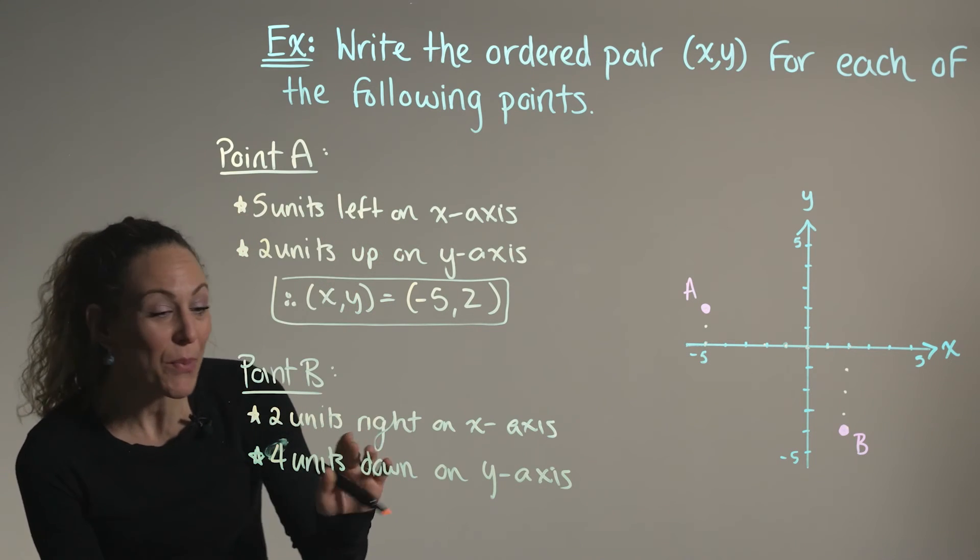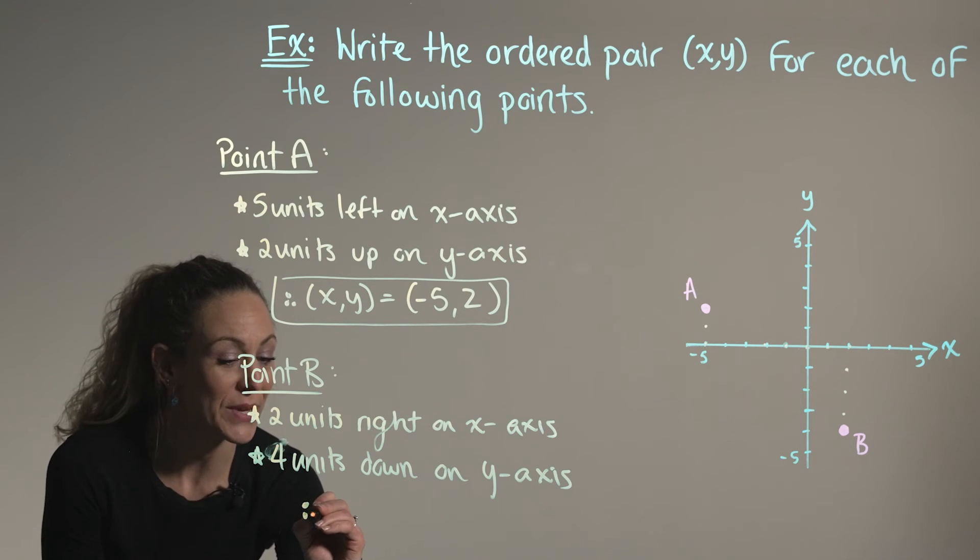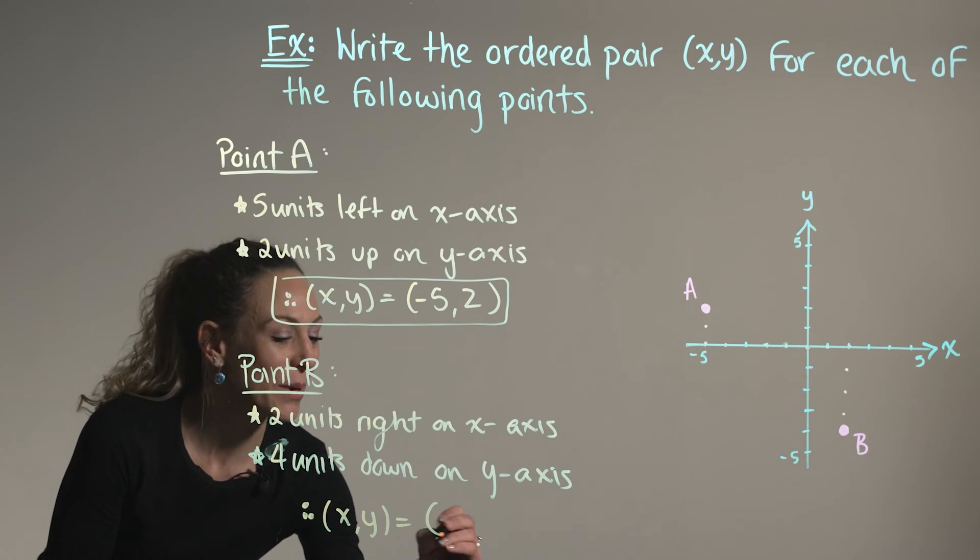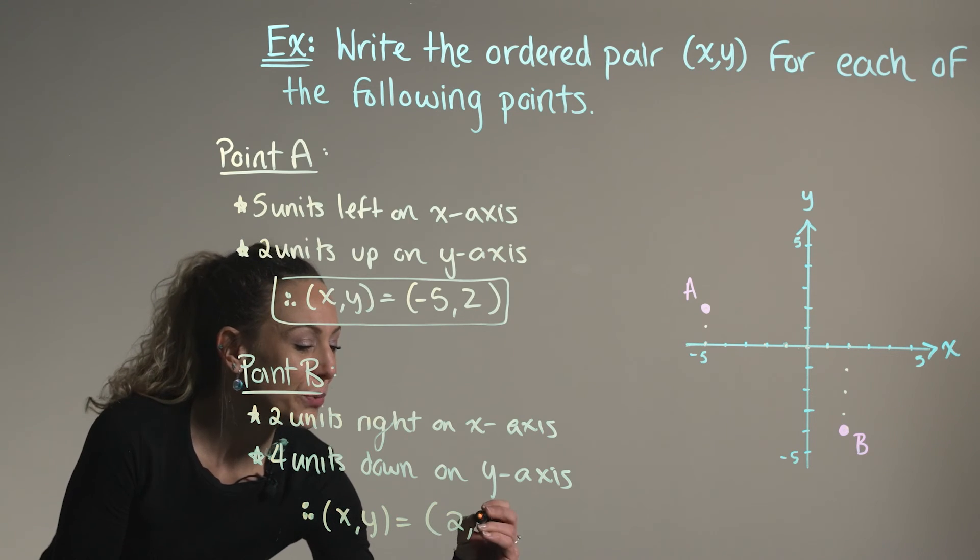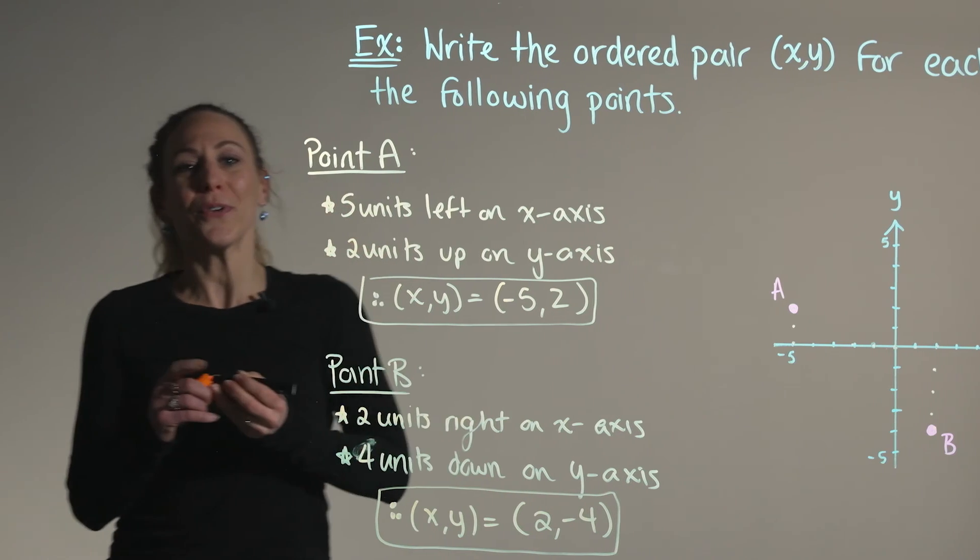So since we've moved two units to the right on the x and four units down on y, our ordered pair is represented as (2, -4), making this our beautiful final answer.